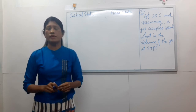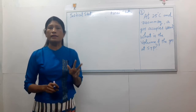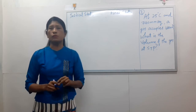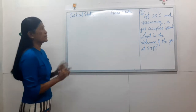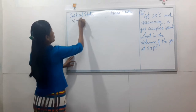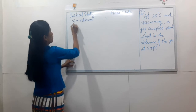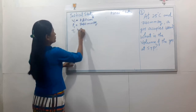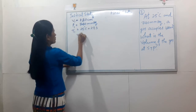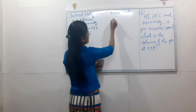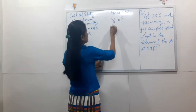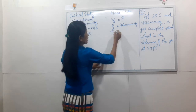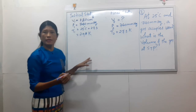So when you turn to STP, problem number 3. P1 is equal to 740 mmHg. T1 is equal to 25 degrees Celsius, which is 273 plus 25 equals 298 Kelvin. The final step is V2. P2 is equal to 760 mmHg and T2 is equal to 273 Kelvin.